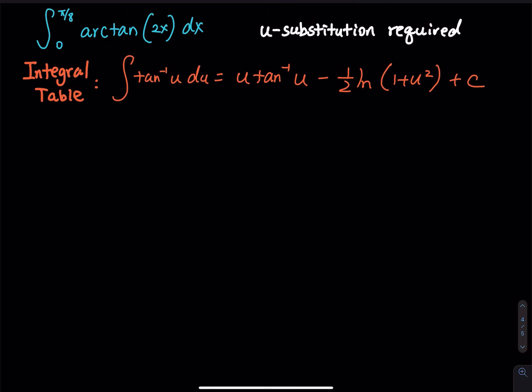So first, we let u equal to 2x, and then du is equal to 2dx, and 1 over 2 du is equal to dx. And then this is going to replace the given dx.